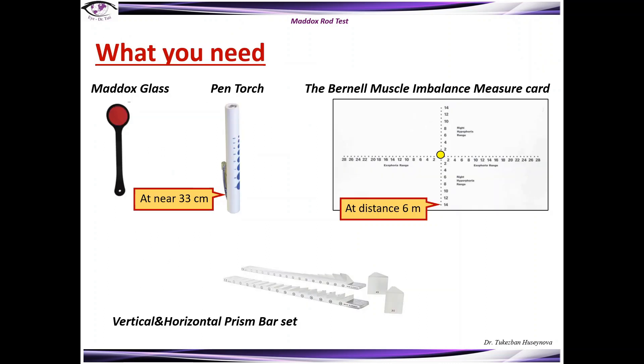So what do we need? We need a Maddox glass, pen torch in order to perform the test at near for 33 cm, and for distance at 6 meters we can use the Bernell muscle imbalance measure card in order to have a fixated light.